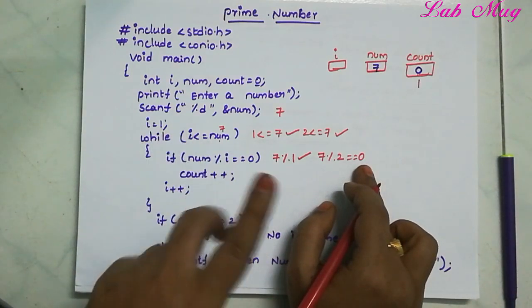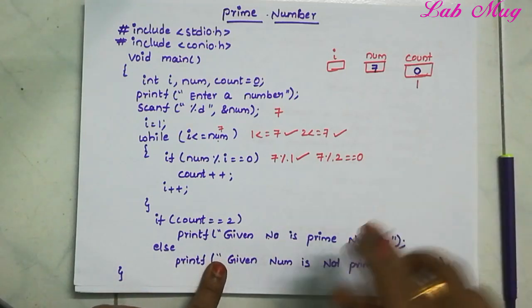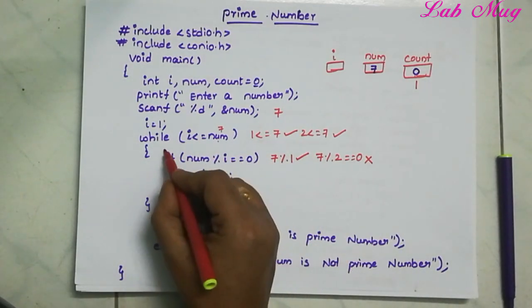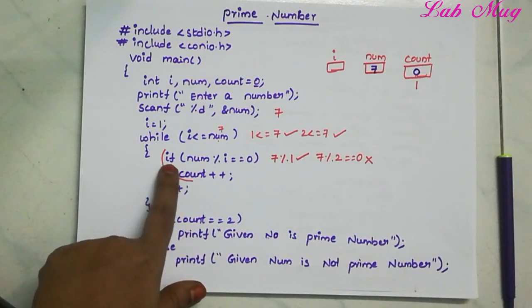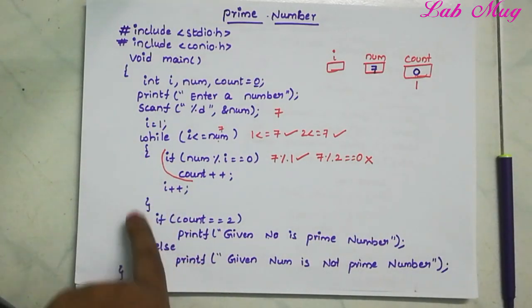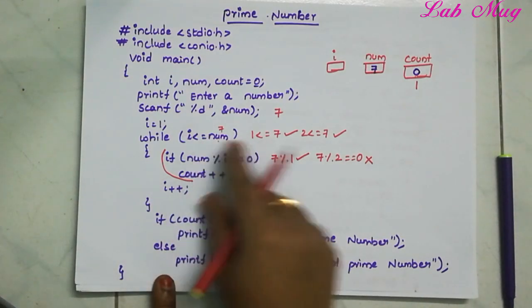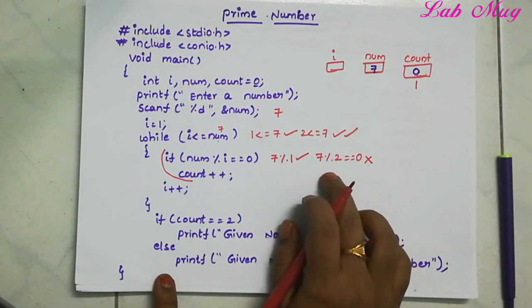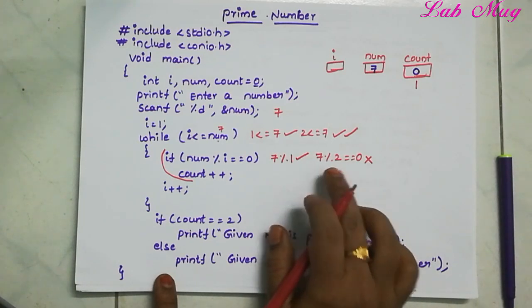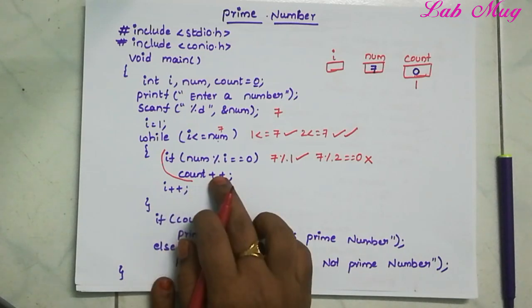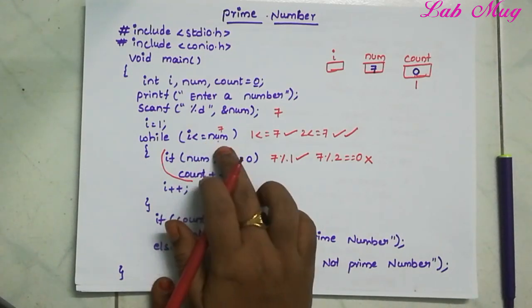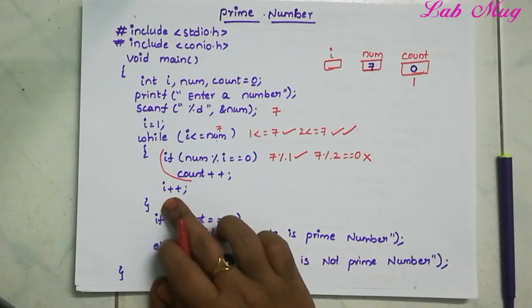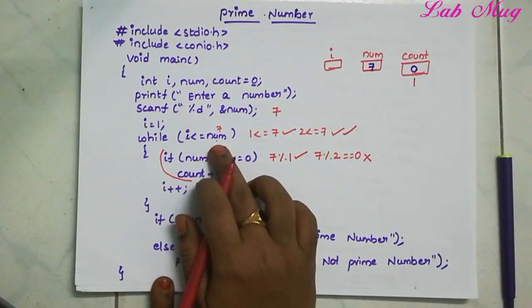i becomes 3. 3 less than or equal to 7 is true. 7 % 3 gives remainder 1, so 3 is not a factor — condition false. i becomes 4. 4 less than or equal to 7 is true. 7 is not divisible by 4 — condition false. i becomes 5. 5 less than or equal to 7 is true. 7 % 5 is not 0, so 5 is not a factor.